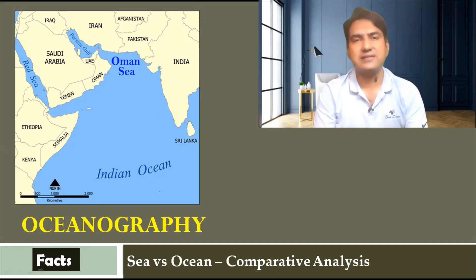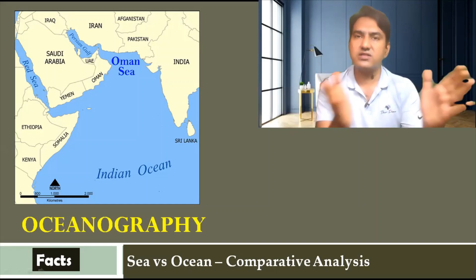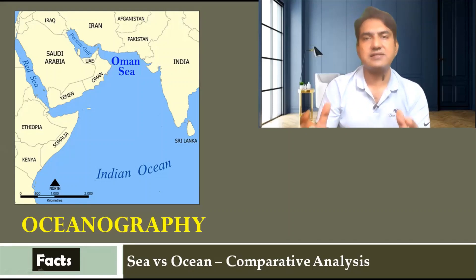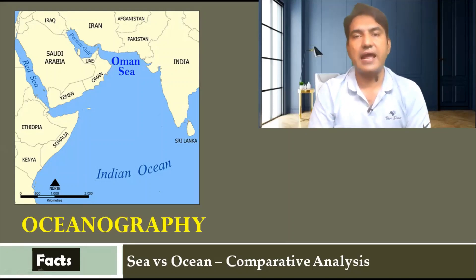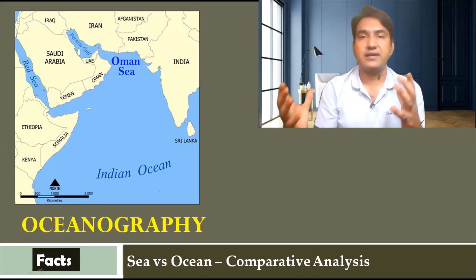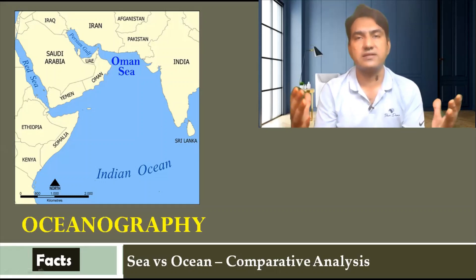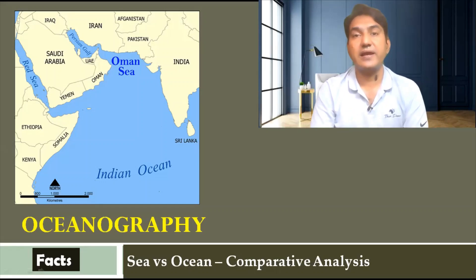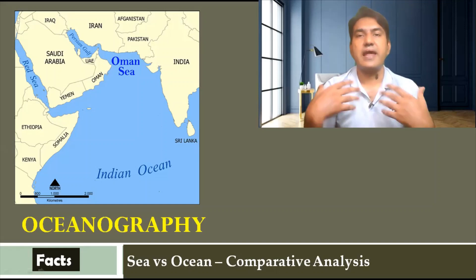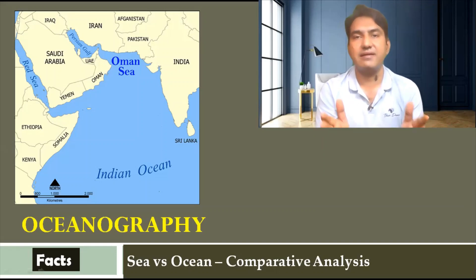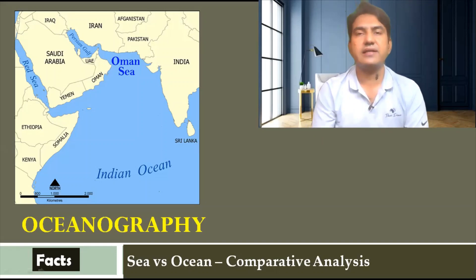Oceans and seas, as I told you earlier, are very gigantic masses of water, but they also have other importance. If you look at the climate of the world, oceans and seas regulate the climate of the earth. The oceanic movements — particularly the currents — play an important role in the exchange and distribution of temperature.